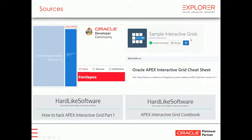There are also two packaged applications: the Sample Interactive Grids, which has lots of good stuff in there, and John Snyders from the Hardlike Software blog has produced the Interactive Grid Cookbook, which is an extension on that application. You can download it from the Hardlike Software website, but first you need to install the Sample Interactive Grids application because it uses the same data and tables. Also from John Snyders' blog is the "How to Hack the Interactive Grid" — a four-part series with lots of useful information.